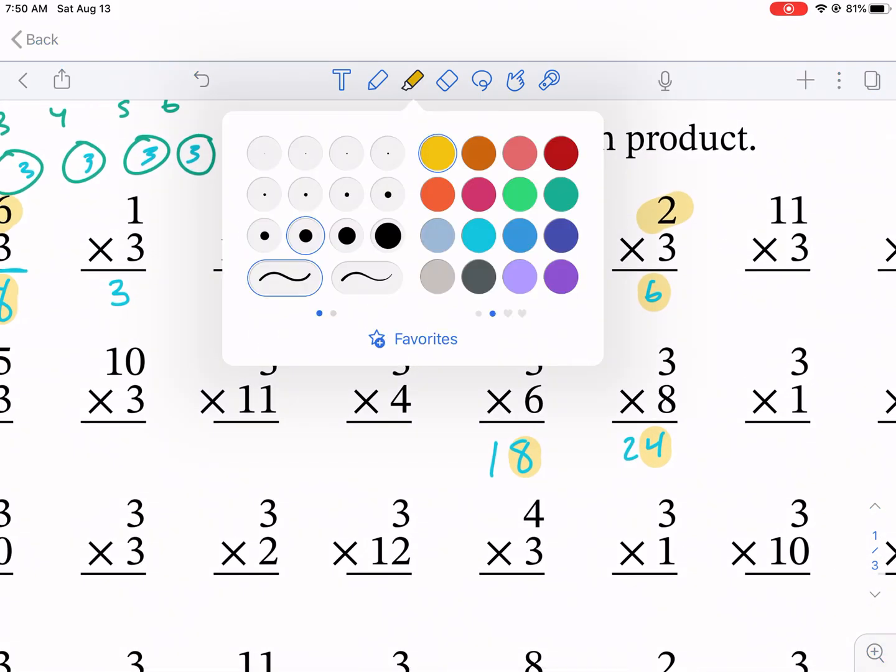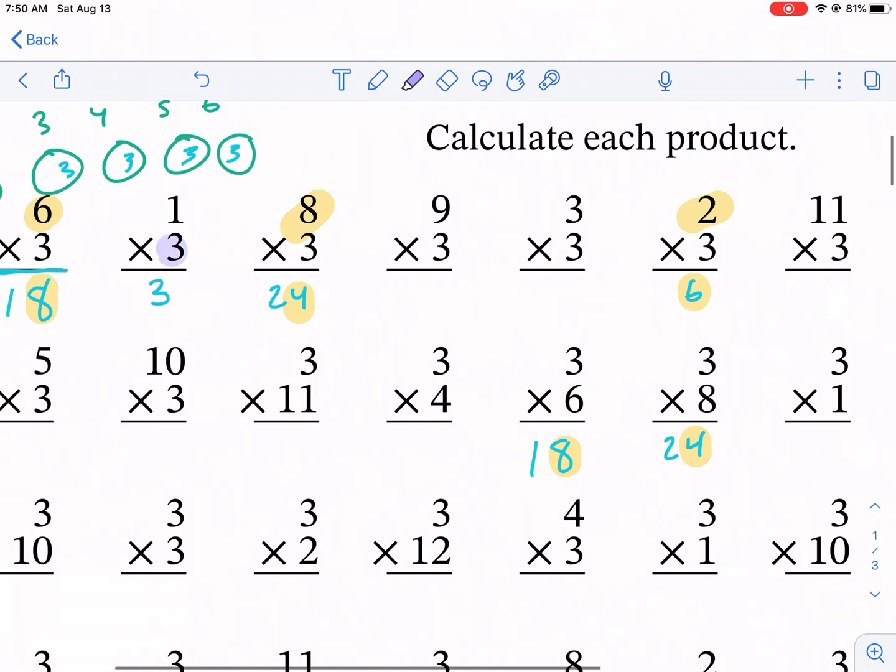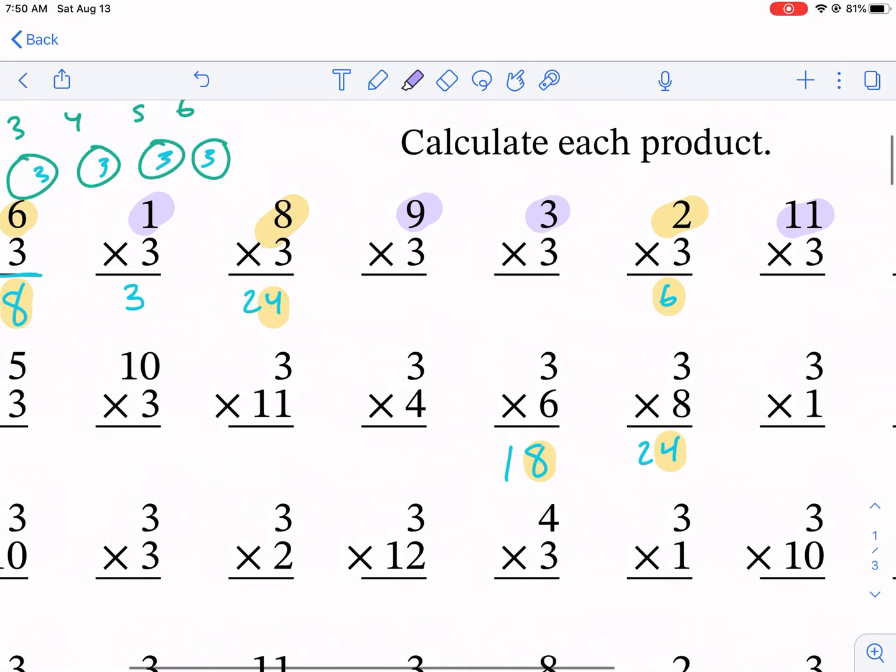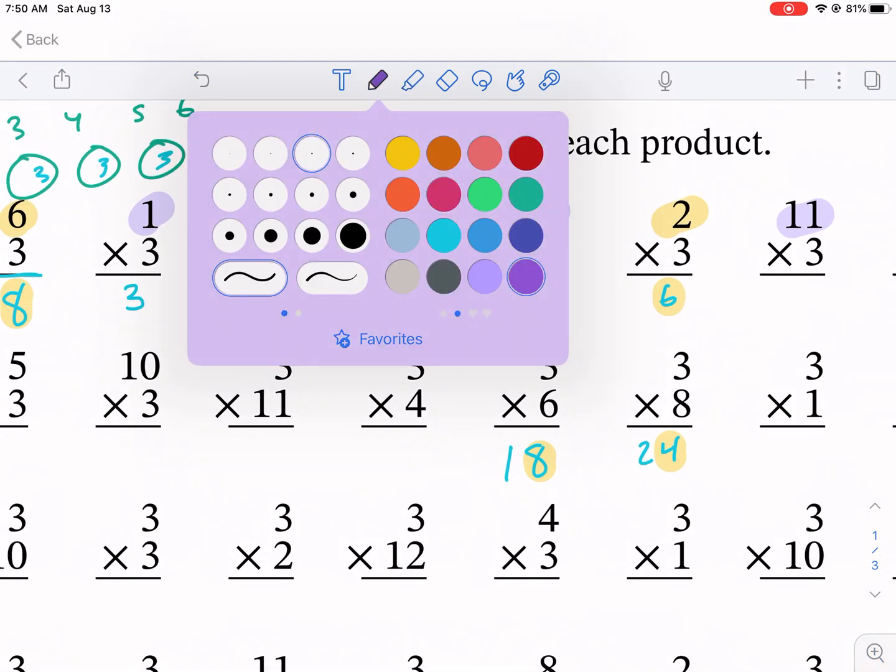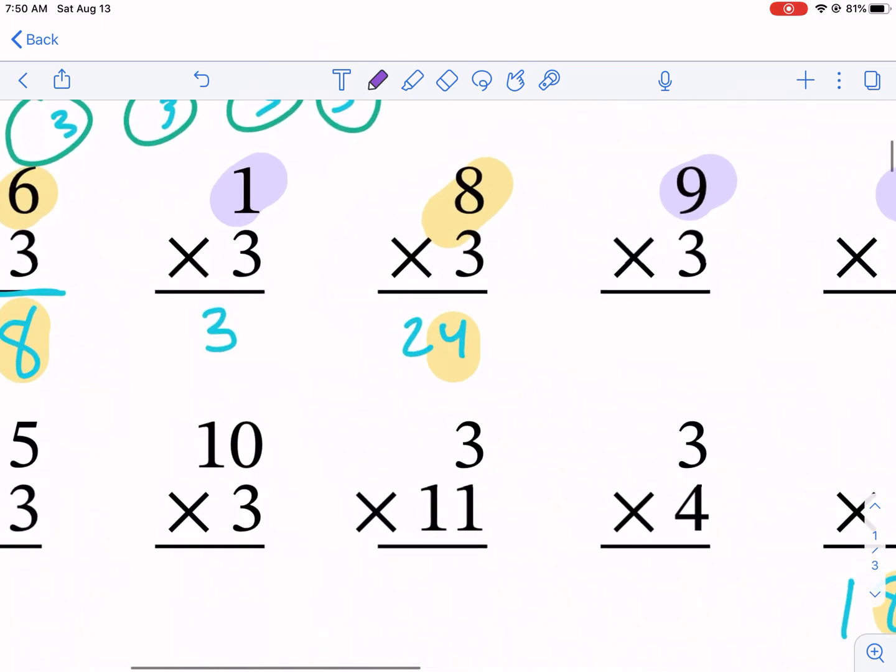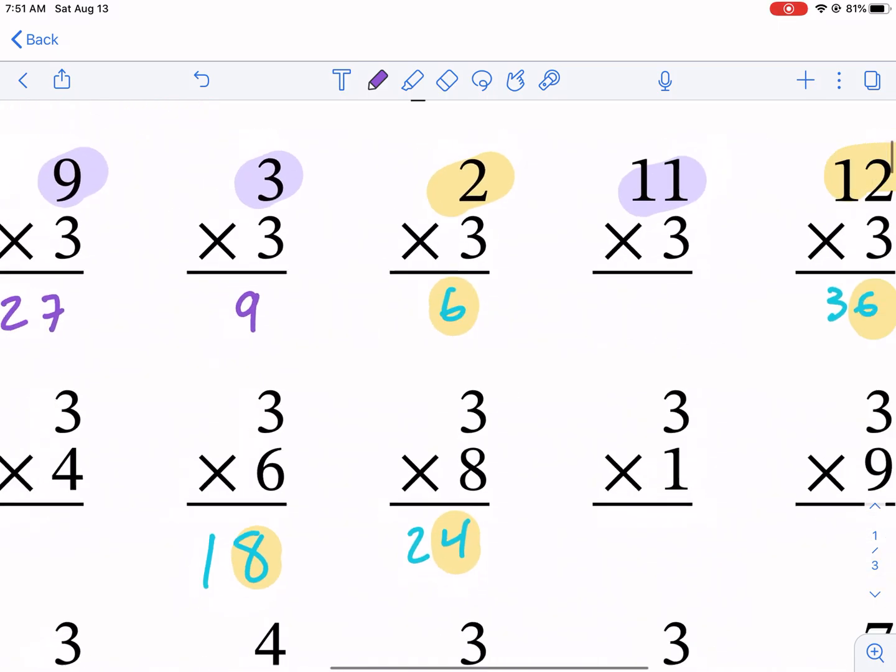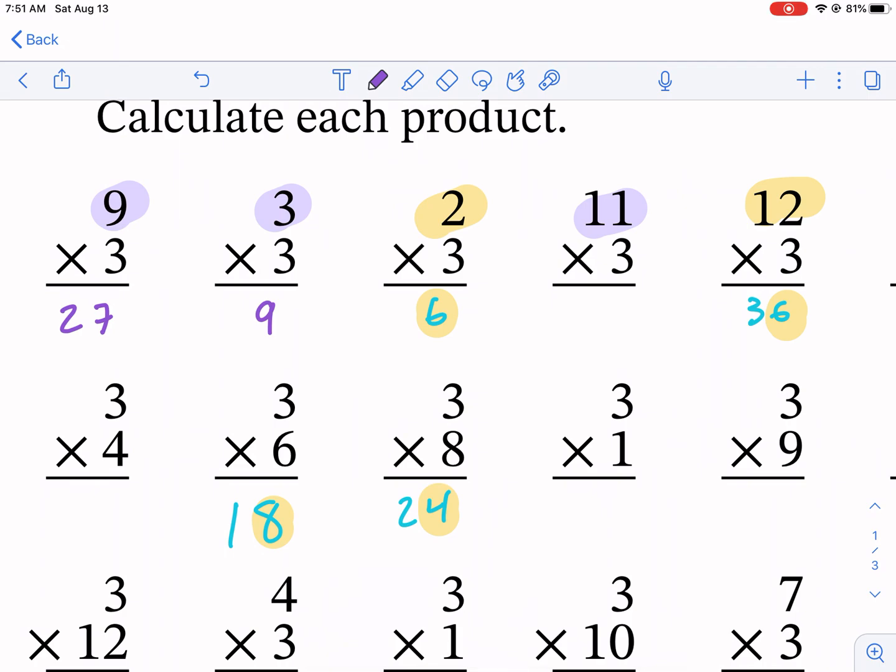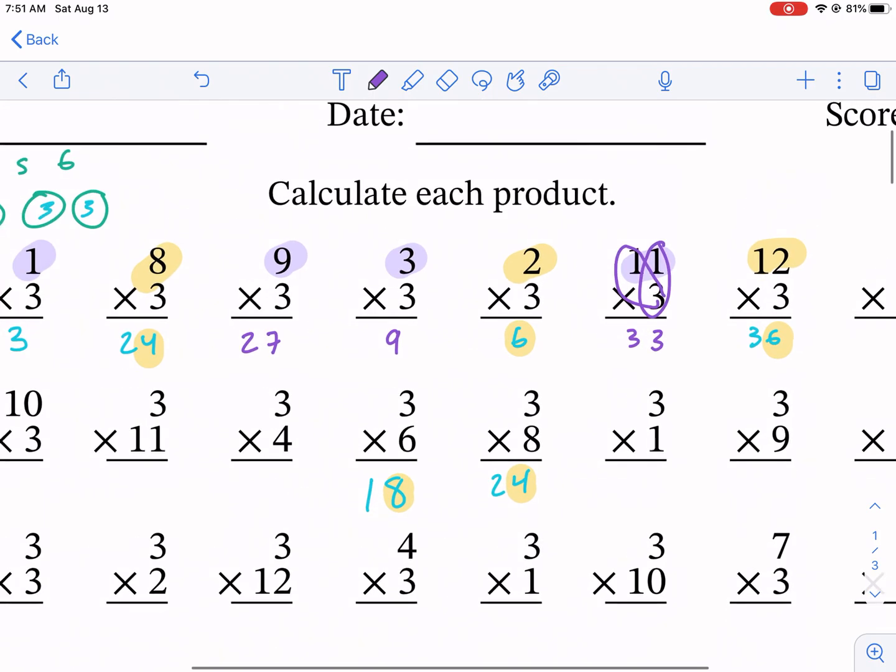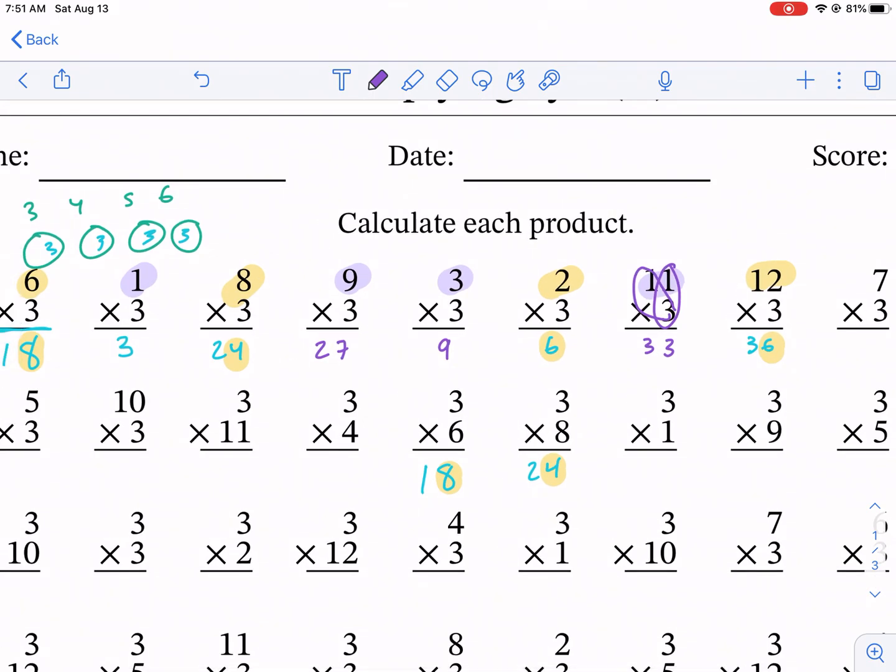And anytime we multiply by an odd number, let me change the color here. So 3, actually we're multiplying by 3. So 1, 9, 3, 11, these are all going to give us odd answers. So 1 times 3 is 3, that's an odd number. 9 times 3 is 27, that's an odd number. 3 times 3 is 9, that's an odd number. 11 times 3. So what we can do here is 3 times 1, that's 3, and then 3 times 1 again, 33. So these are all odd numbers anytime you multiply by an odd number with 3. Anytime you multiply by an even number, it's even. So that's a little trick for you.